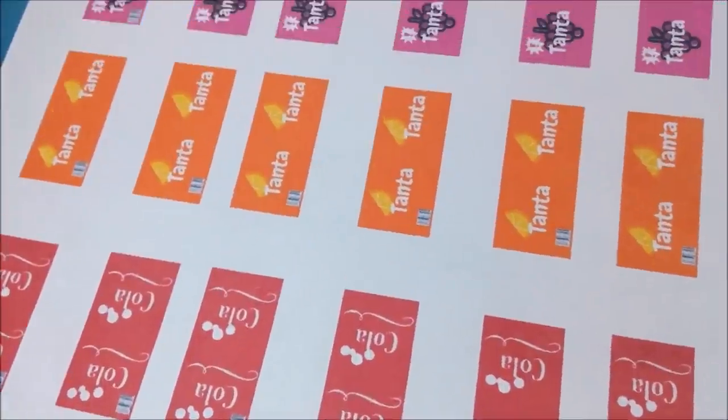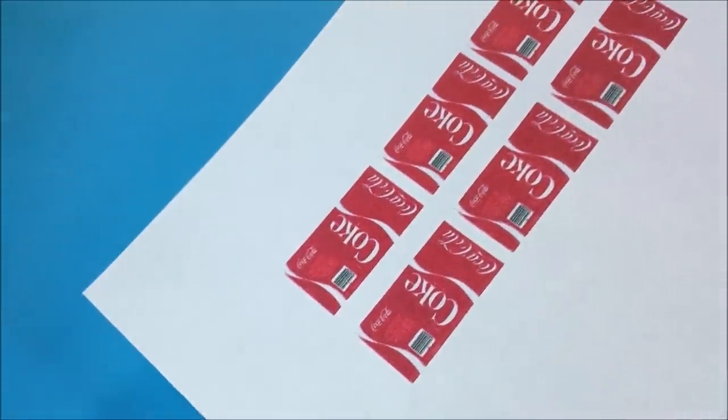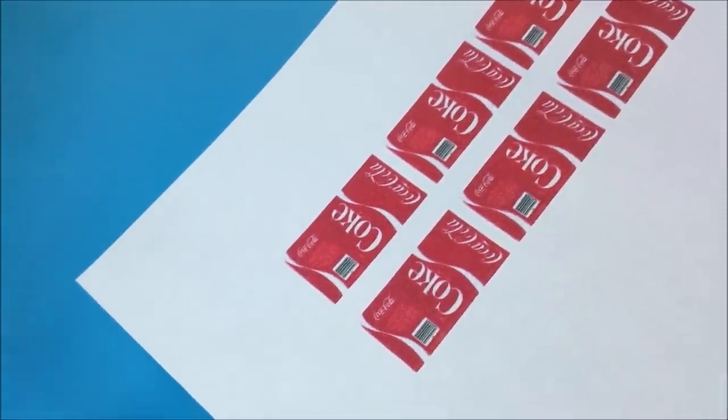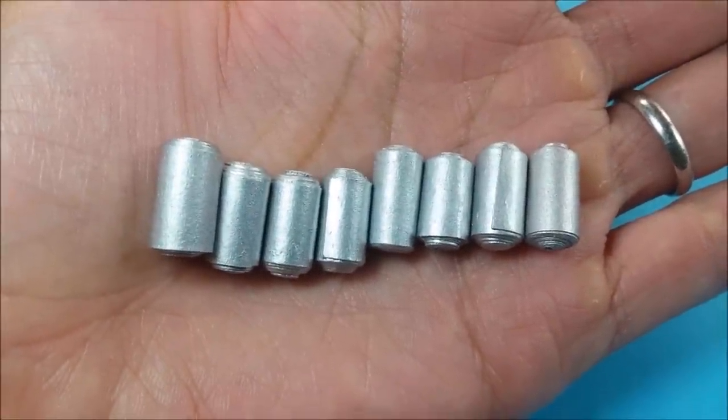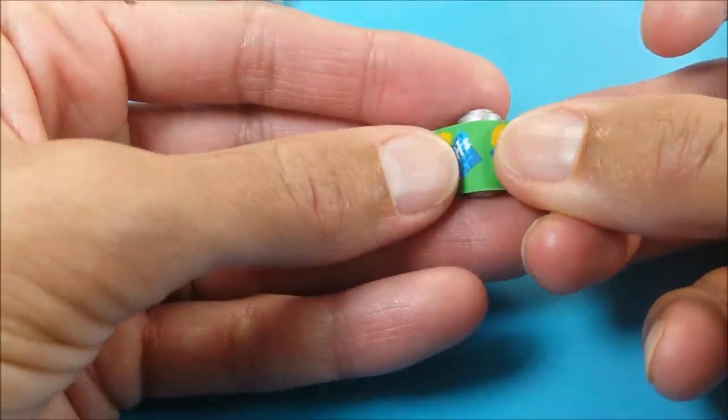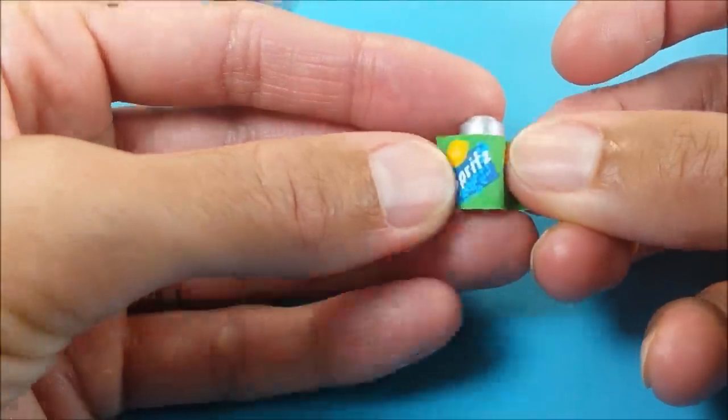Then I print out the labels on paper. And if you don't like the labels I've made here, you can always just Google your own. I just Googled soda can label and these Coke ones popped up. I copy them to a Word document, shrink them and print them out. And when your cans are dry, you can wrap them in your labels.